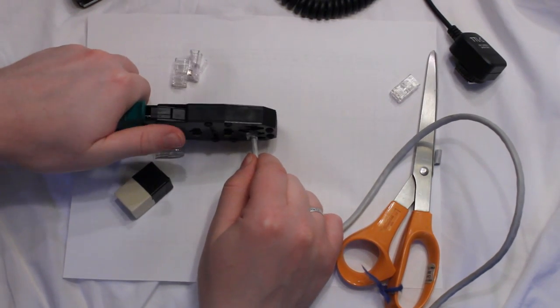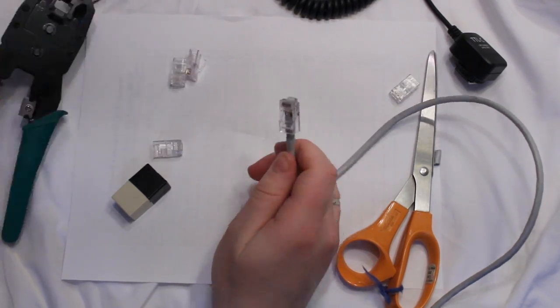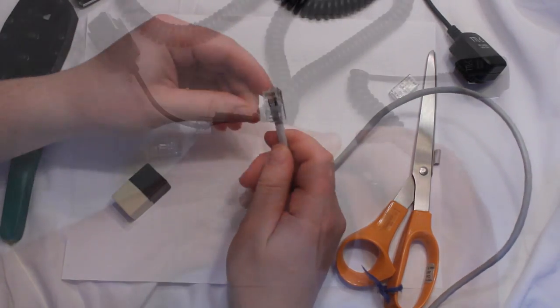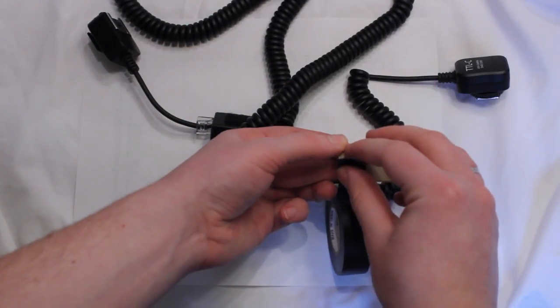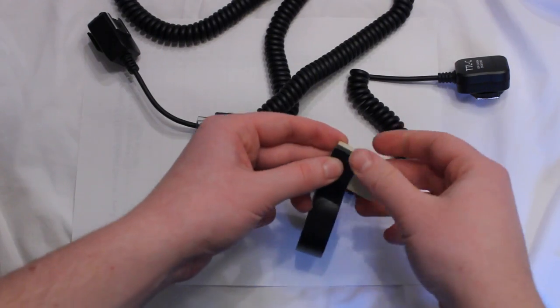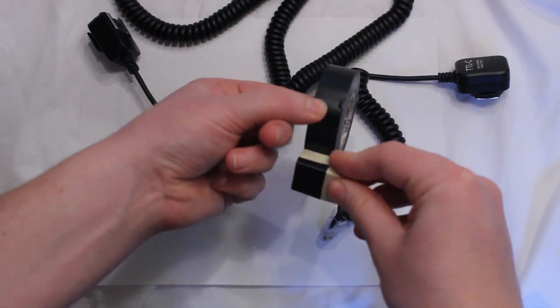Now you just place it into the ethernet crimping tool, and when you're placing them in there, push up and crimp tightly, and that's how you make the plug. So do that again on the other side.